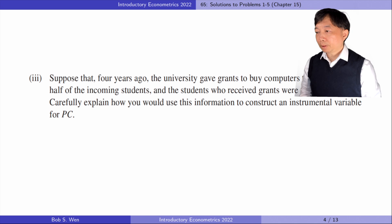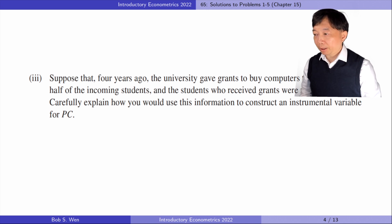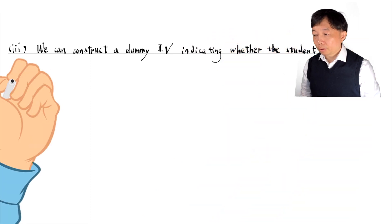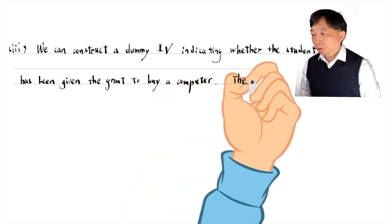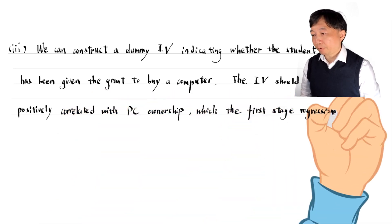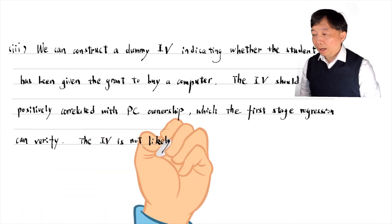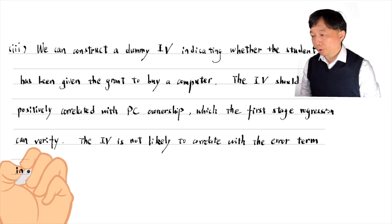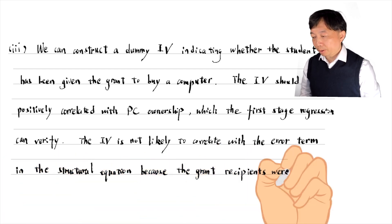In part 3, suppose that 4 years ago the university gave grants to buy computers to roughly one-half of the incoming students, and the students who received grants were randomly chosen. We can construct a dummy instrumental variable indicating whether the student has been given the grant to buy a computer. The IV should be positively correlated with PC ownership, which the first stage regression can verify. The IV is not likely to correlate with the error term in the structural equation, because the grant recipients were randomly chosen 4 years ago.